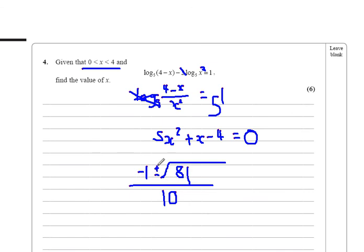So, minus 1 plus 9, which is 8 over 10. Write as a decimal, if you will. Or the other solution is minus 1 minus 9, which is minus 10 over 10, which is minus 1, and that clearly doesn't work. So, 0.8 should be the answer.